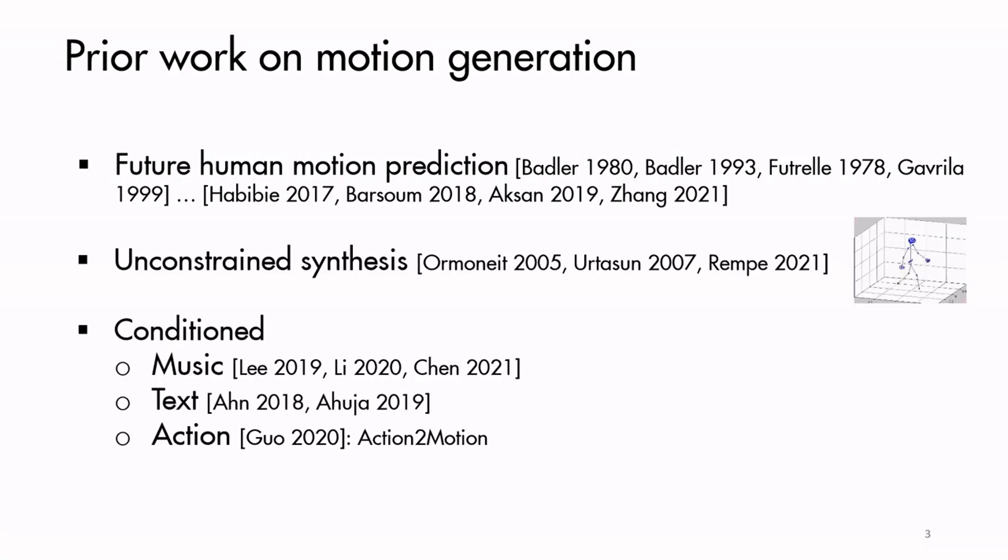On the other hand, conditioned motion generation targets controllable synthesis. Examples include music-conditioned dance generation. The closest to our work is action-to-motion, a per-frame variational autoencoder on actions using an autoregressive GRU-based architecture.